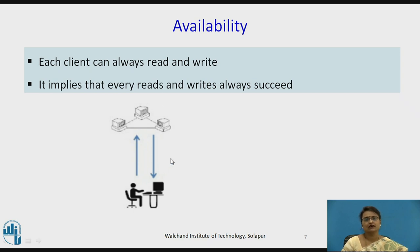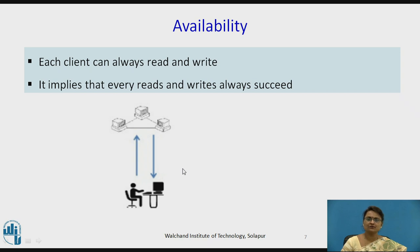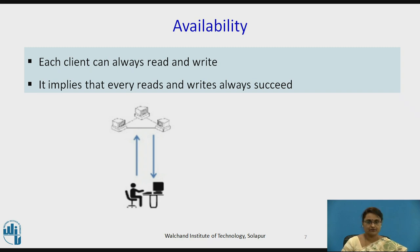Here you can see in the diagram that a particular request is made and a response is coming. From where the response is coming does not matter, but the response has to come — the system should not say that the particular data is not available.